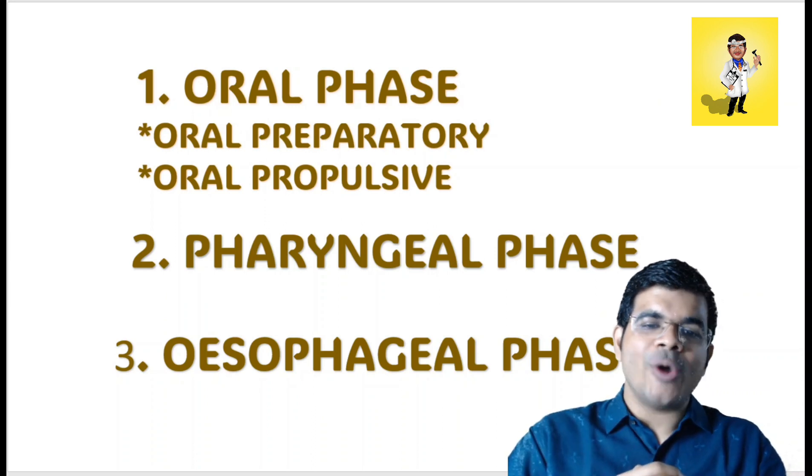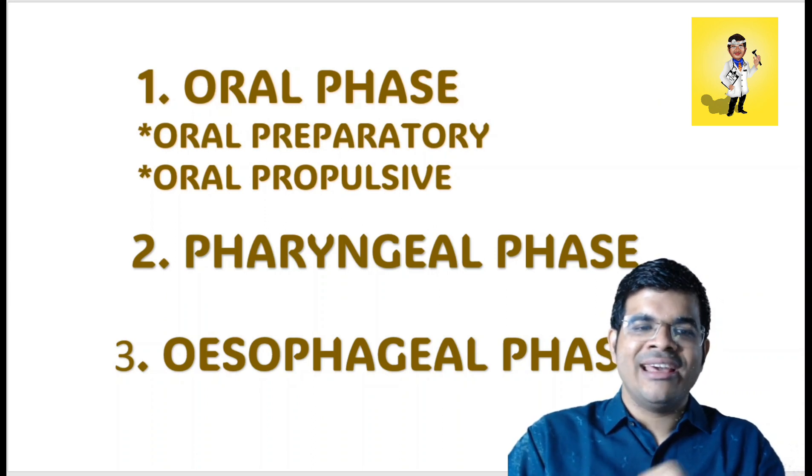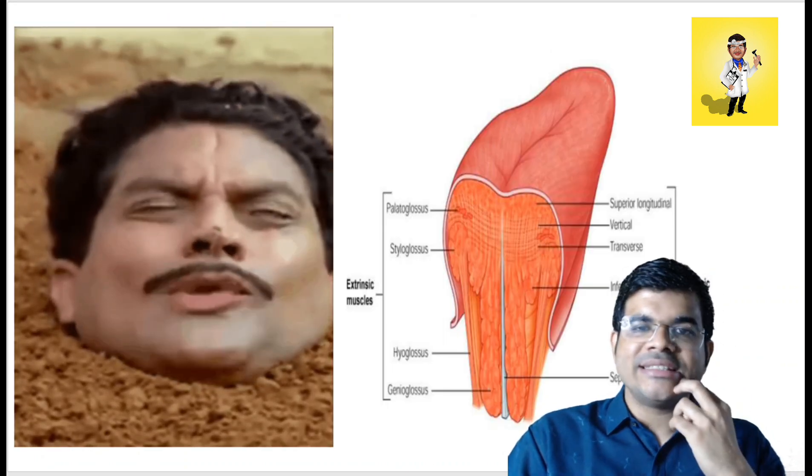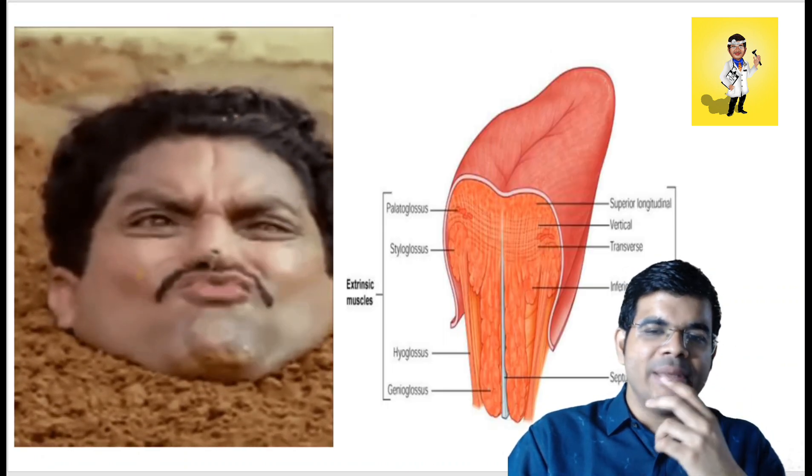How does the oral preparatory phase start? It starts with the opening of the mouth, and for that you need the lateral pterygoids. You have the muscles of mastication — the lateral pterygoid, medial pterygoid, masseter, and temporalis. The lateral pterygoid aids with the opening of the mouth. Once the food is in the mouth, you need the labial muscles and the tongue muscles to act.